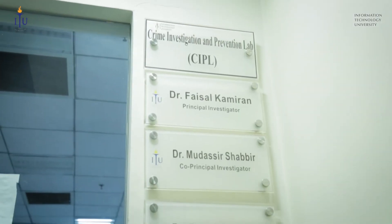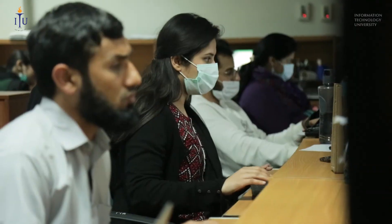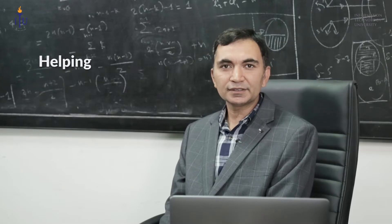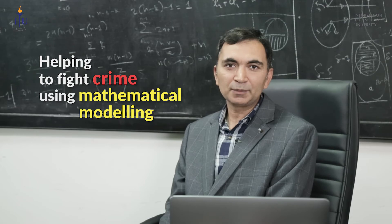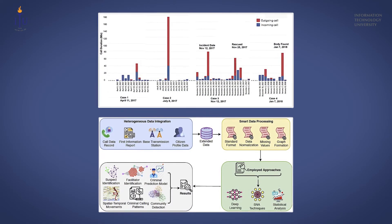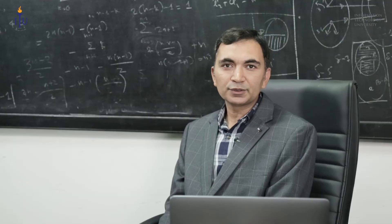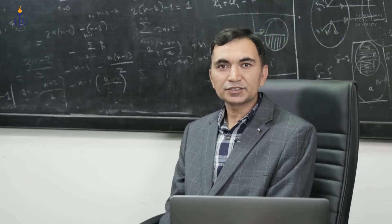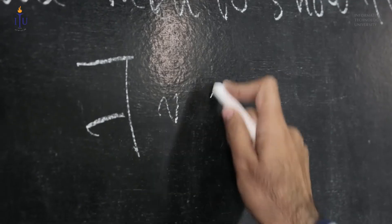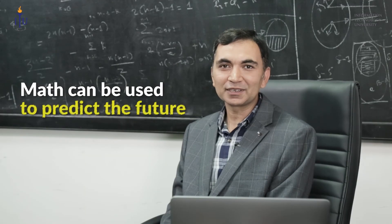I'm also part of the Crime Investigation and Prevention Lab at ITU. In this lab, we are trying to help law enforcement agencies to fight crime using mathematical modeling. We are also trying to find out how to optimally allocate resources so that the response time to a crime event should be minimized. So you see, math can be used to predict the future as well.